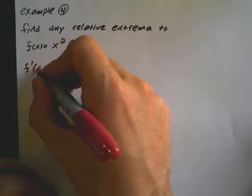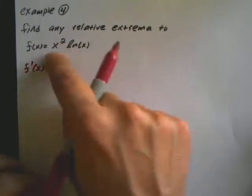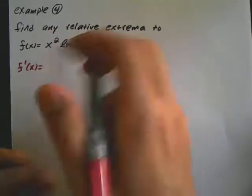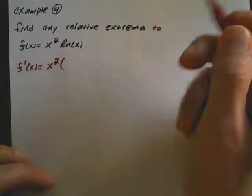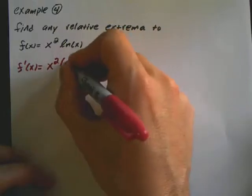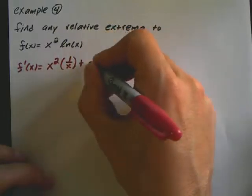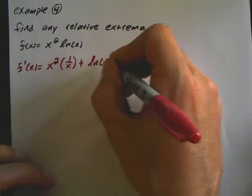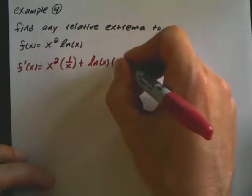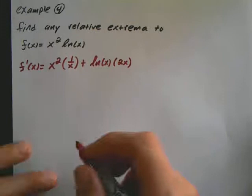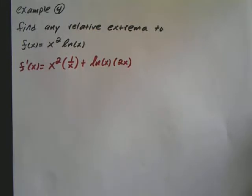F prime of x is going to be, this requires the product rule. So the product rule on this is going to be keep x squared the same. Derivative of ln is 1 over x. Plus keep ln of x the same. Derivative of x squared is 2x.